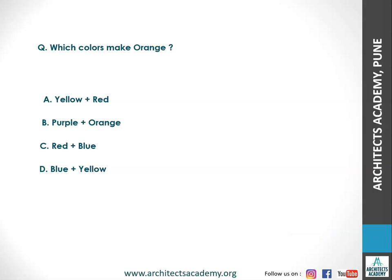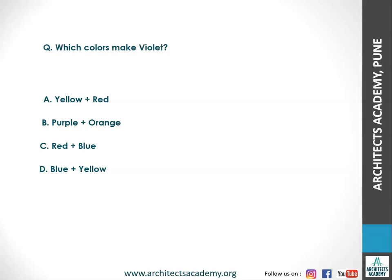Next, which color makes orange? The simple answer is yellow plus red. Yellow and red are primary colors and orange is a secondary color — you mix two primaries to get one secondary. Next, which colors make violet? Same logic — the answer is red plus blue.